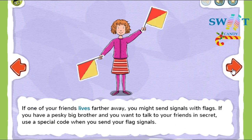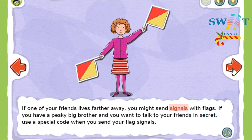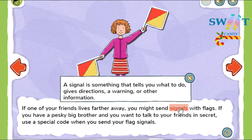If one of your friends lives farther away, you might send signals with flags. If you have a pesky big brother and you want to talk to your friends in secret, use a special code when you send your flag signals. A signal is something that tells you what to do, gives directions, a warning, or other information. A red light is a signal that tells you to stop your car.